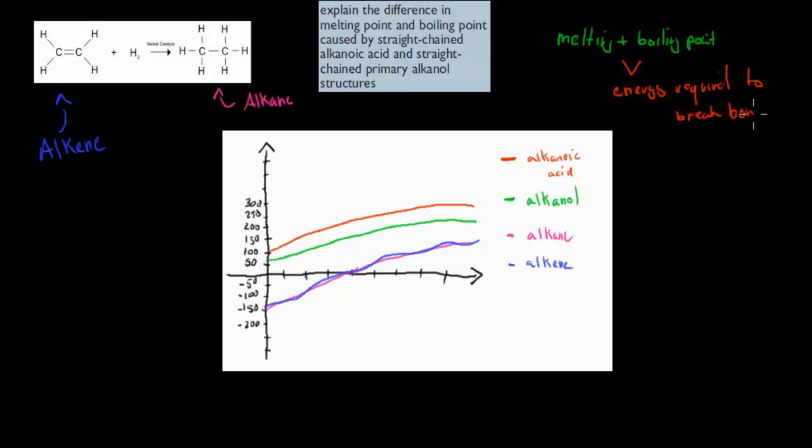There are different substances which might be gaseous at room temperature, and other substances which might be liquid or even solid. The strength of bonds in a gas at room temperature will be weaker than those which are solid or liquid. That's the idea behind melting and boiling points.